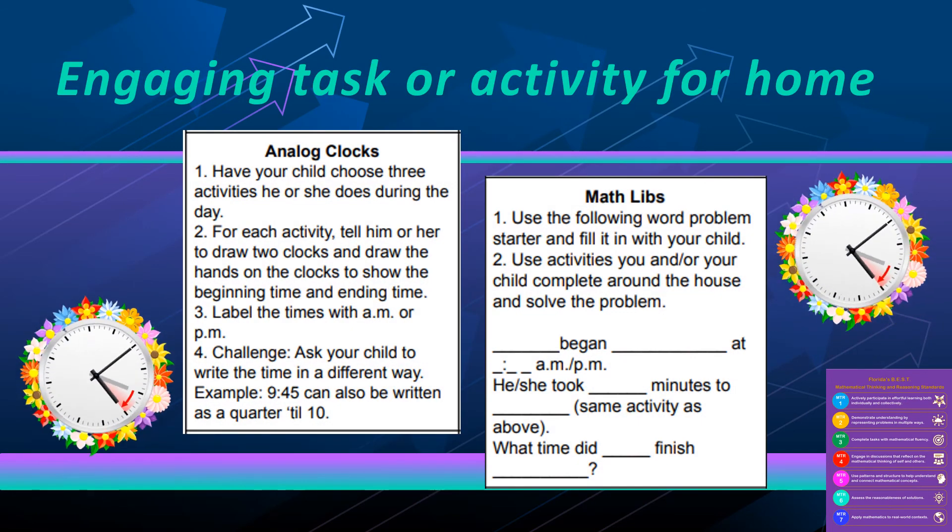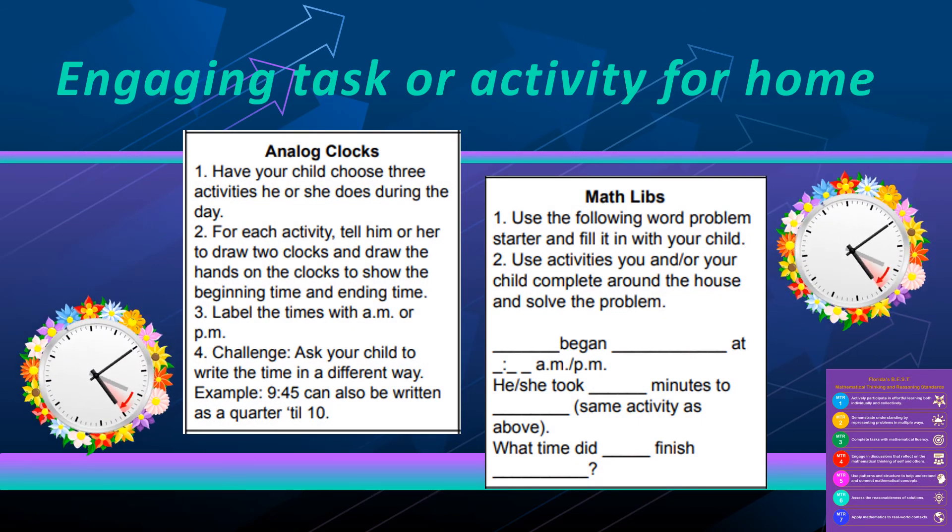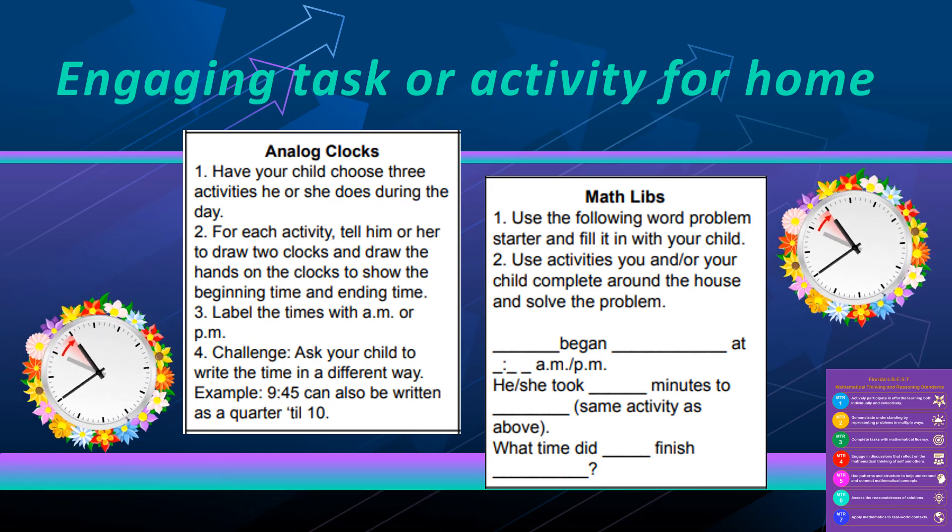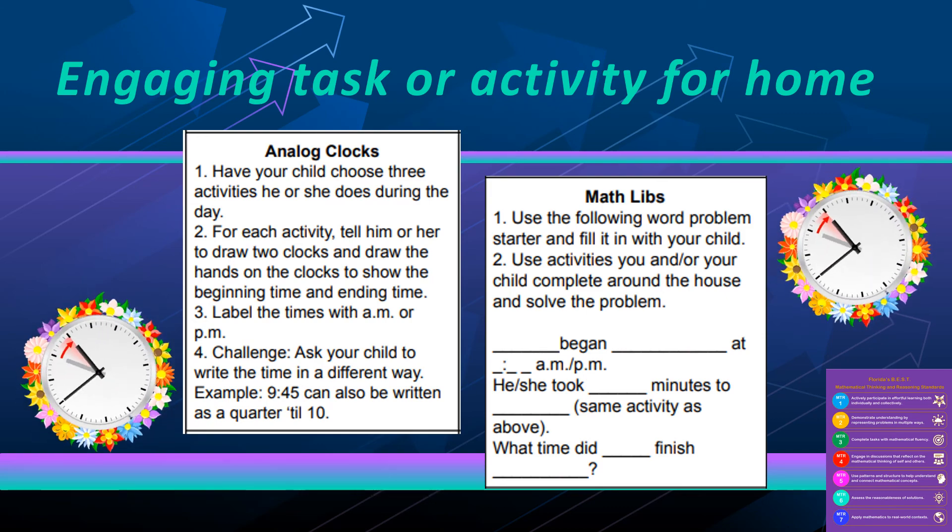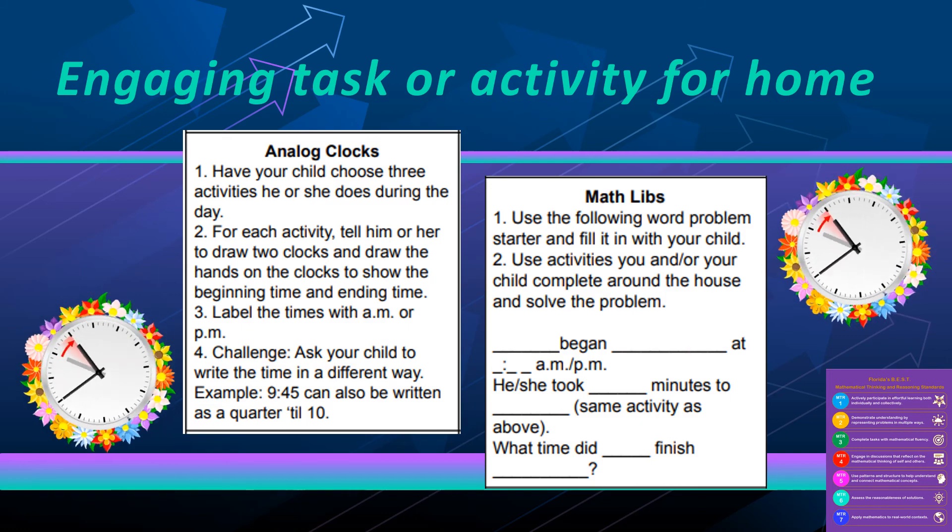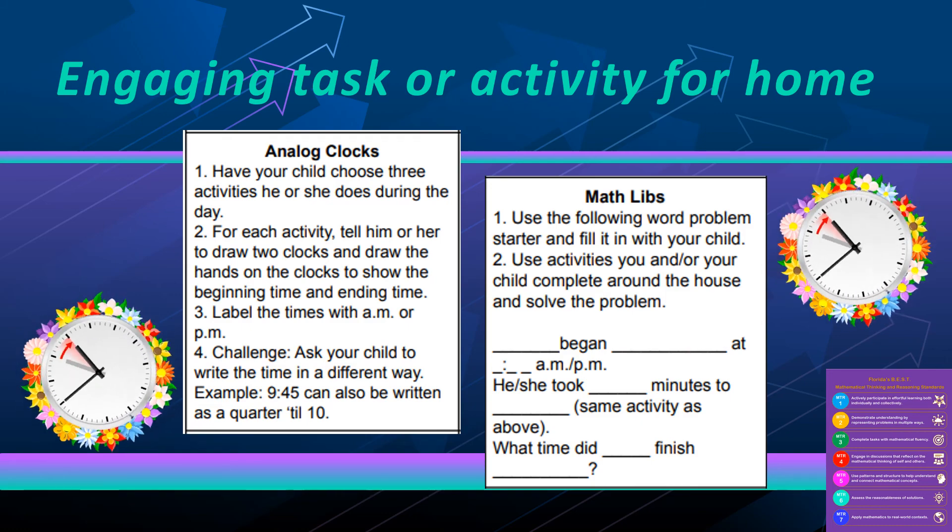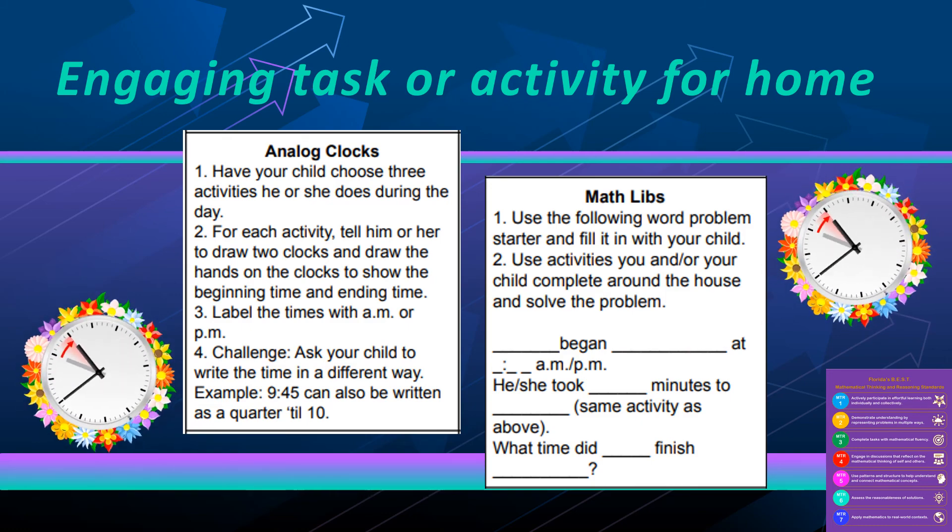These are two examples of activities students can do at home. One is called analog clocks, where students come up with their own real-life scenarios to represent the elapsed time. And the second one, math libs. Students can fill in their own portions of one and two-step word problems to then solve.